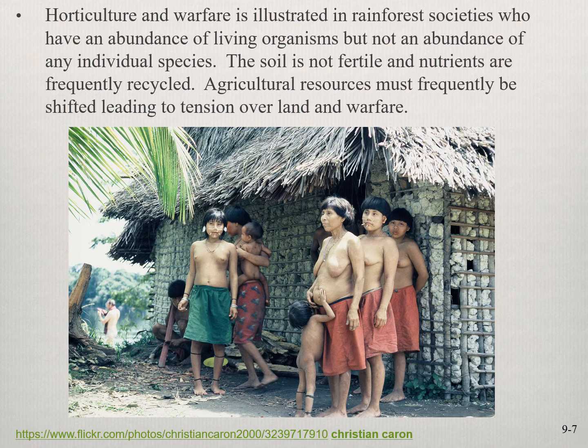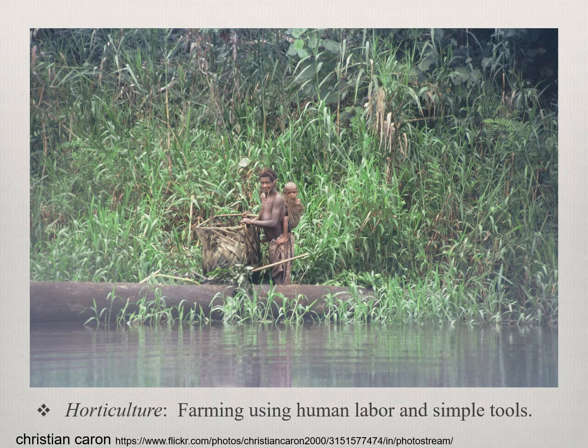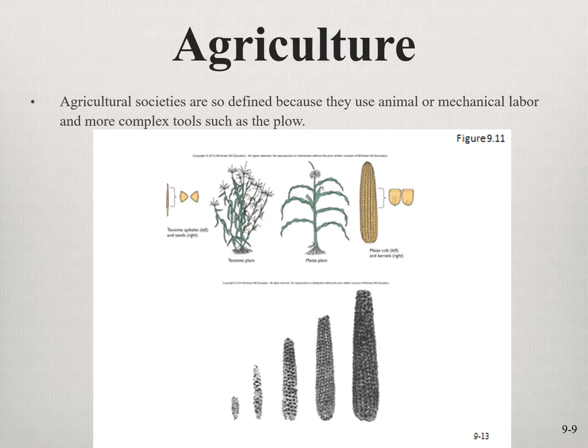Just to remind you, the definition of horticulture is farming using human labor and simple tools. Now we're going to agriculture, which relies first on animal labor, then mechanical labor, and now we have industrialization — an intense form in which machines have completely replaced humans. You very rarely see a farmer with a sickle or scythe actually reaping grain.